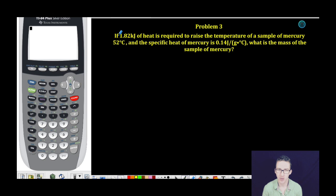In this problem, if 1.82 kilojoules of heat is required to raise the temperature of a sample of mercury 52 degrees Celsius,